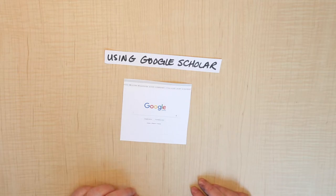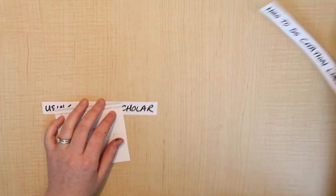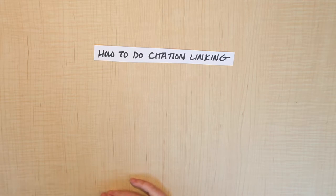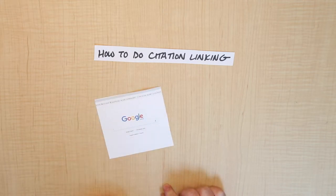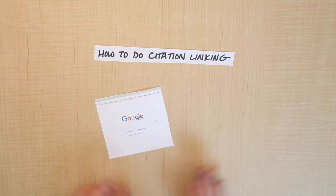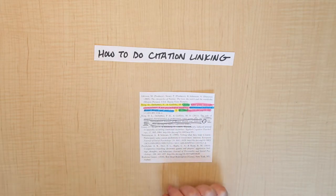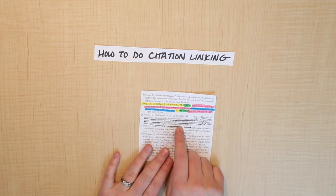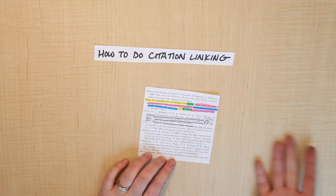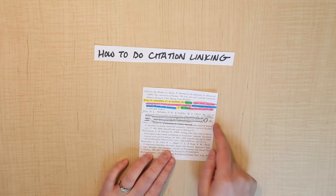Then we talked about how to use Google Scholar as another way to be a little bit more advanced as a researcher and see what else is out there besides what's in PsycInfo. We covered how to do citation linking — both how to use Google Scholar to see who else has cited a paper you've found, so you can sort of link out from that paper, and also how to zoom in on the reference list from another paper and use those references as further resources, as well as how to go through a reference list and identify all its different parts.